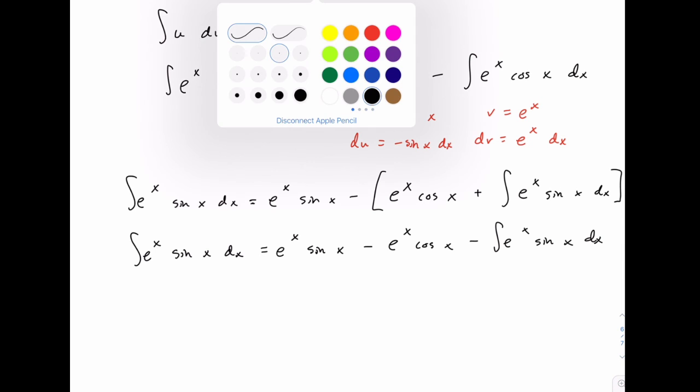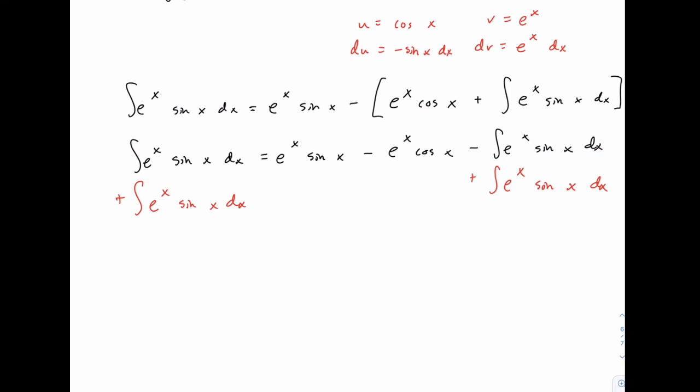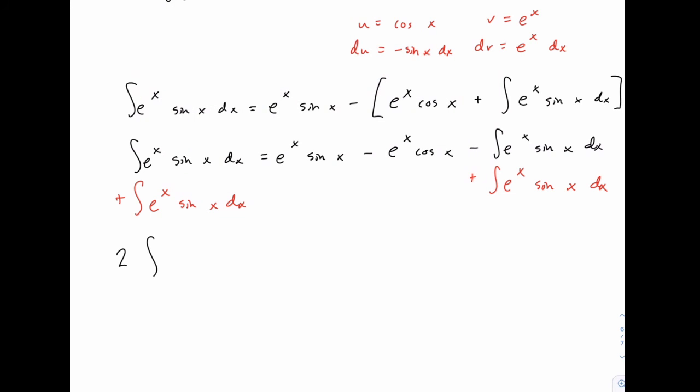We can add this to both sides, and then we'll have two times that integral equals e to the x sine of x minus e to the x cosine of x.